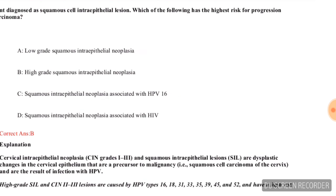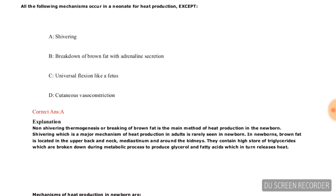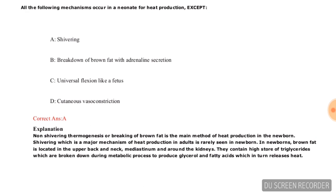The next and final question for today: All of the following mechanisms occur in a neonate for heat production except — options are shivering, breakdown of brown fat, adrenal secretion, universal flexion like a fetus, or cutaneous vasoconstriction. The correct answer is shivering, option A — neonates do not produce heat by shivering.